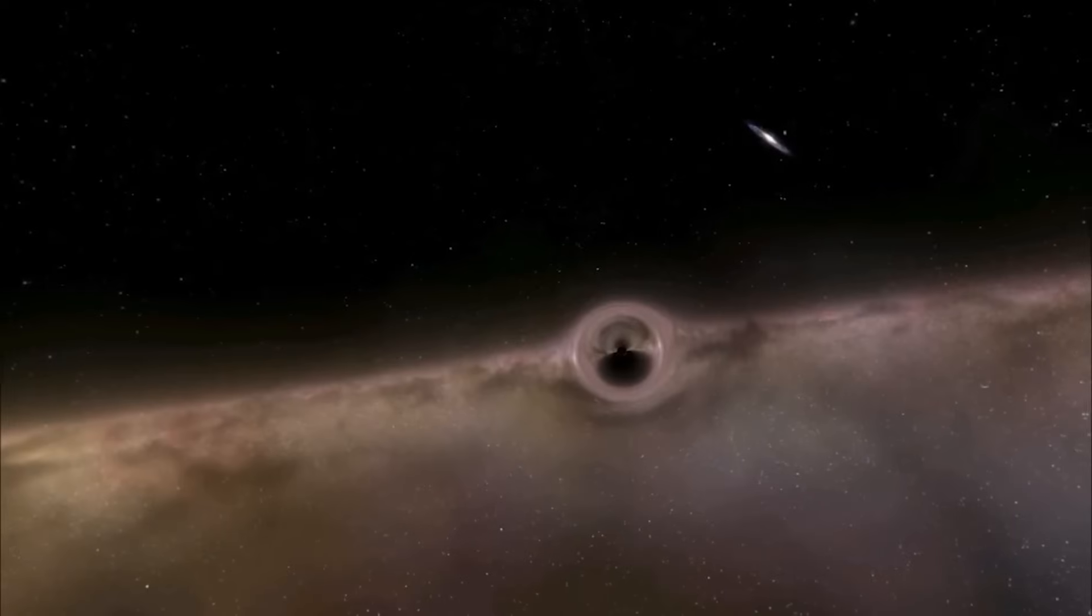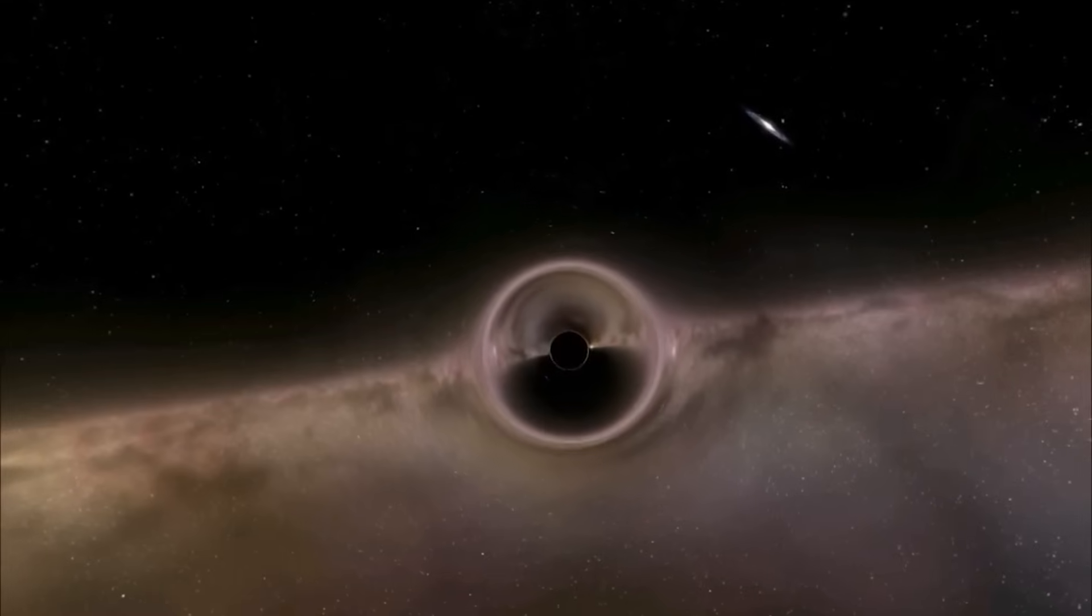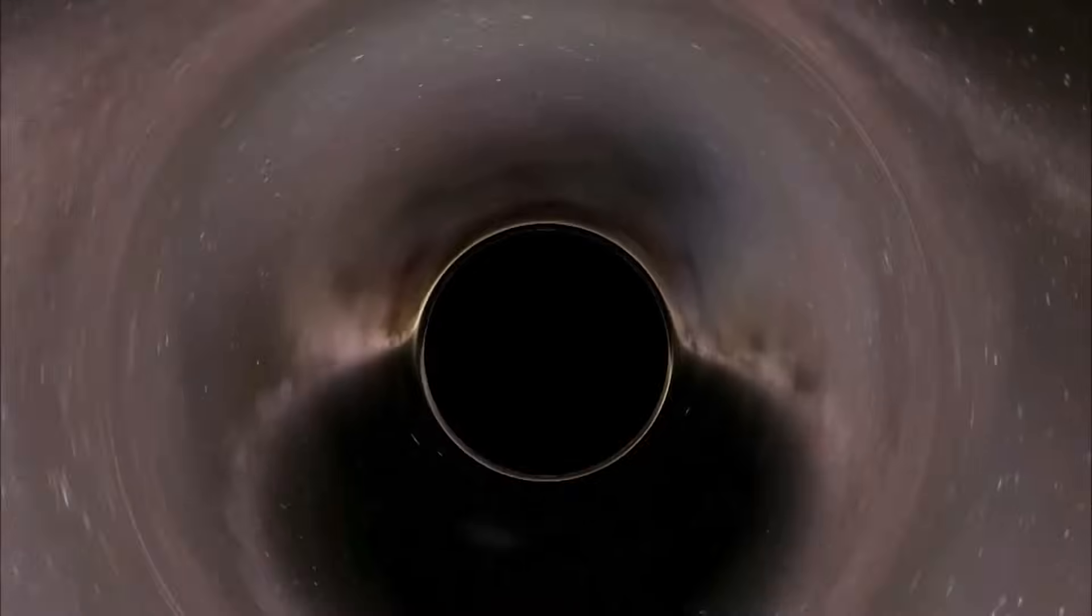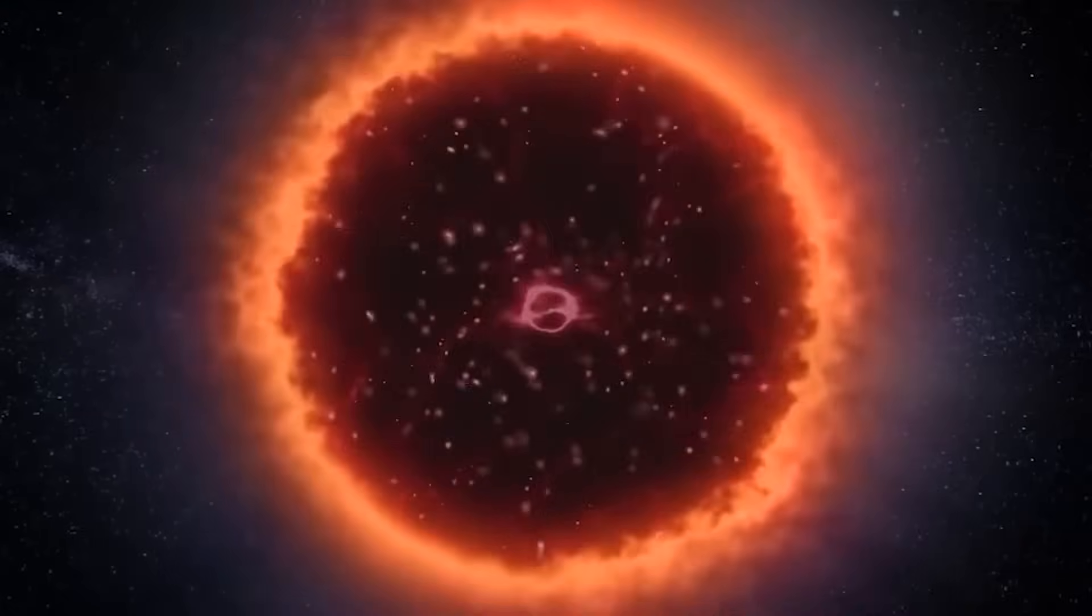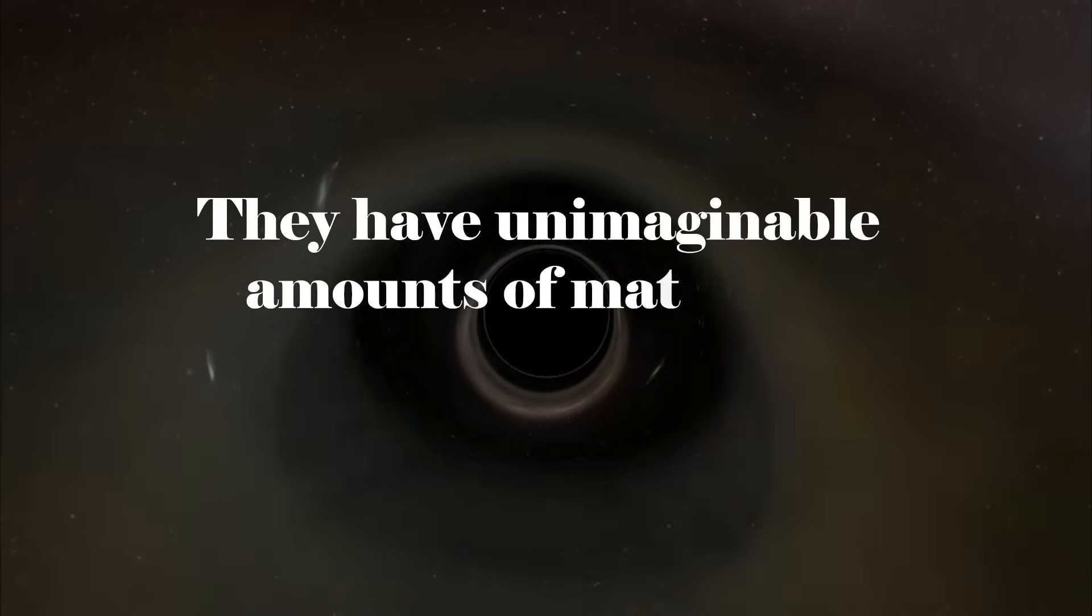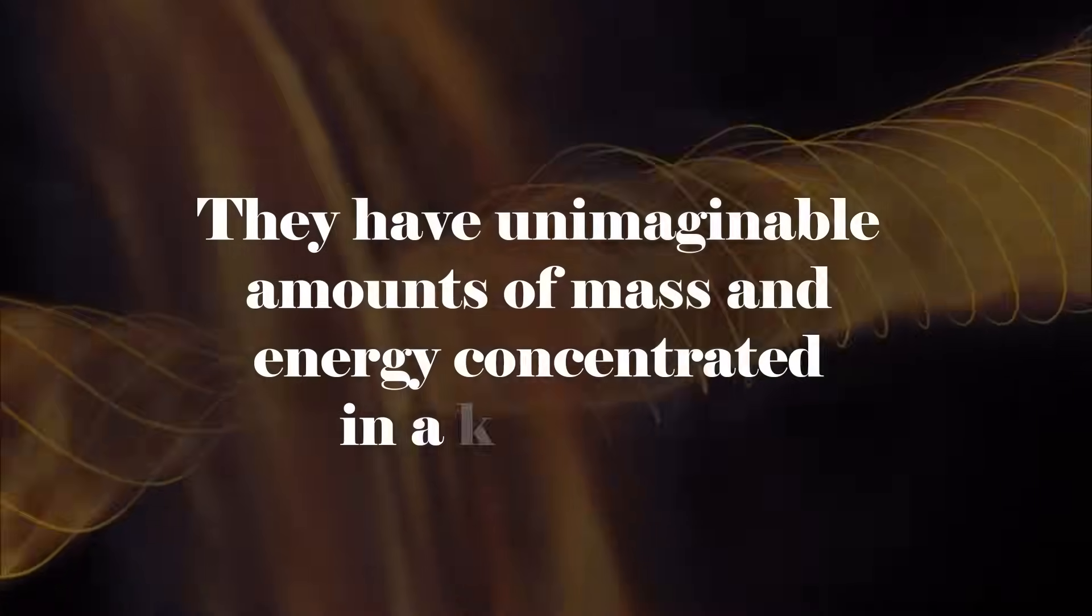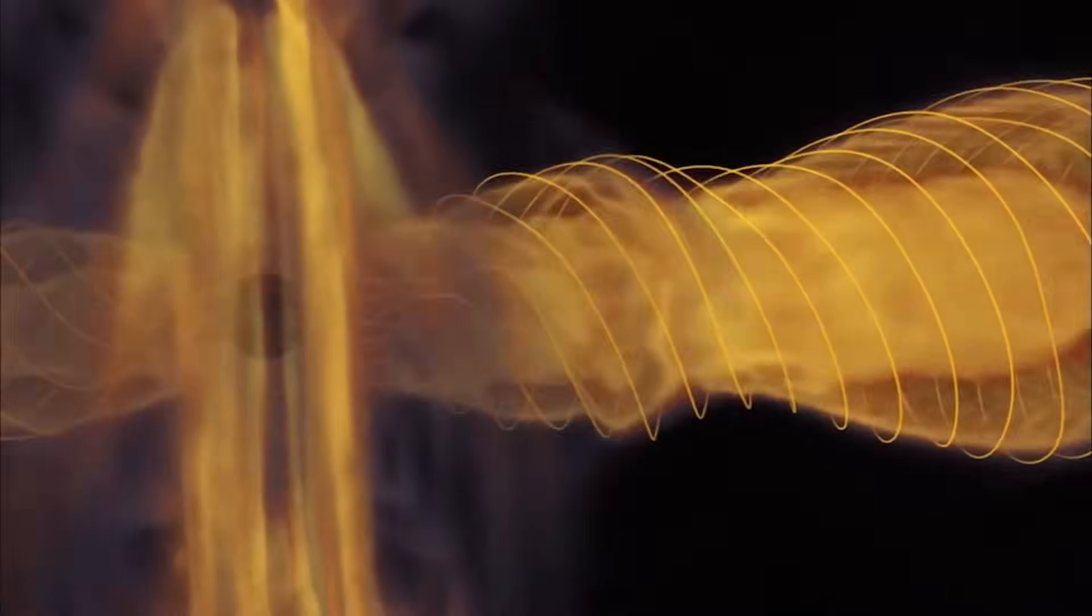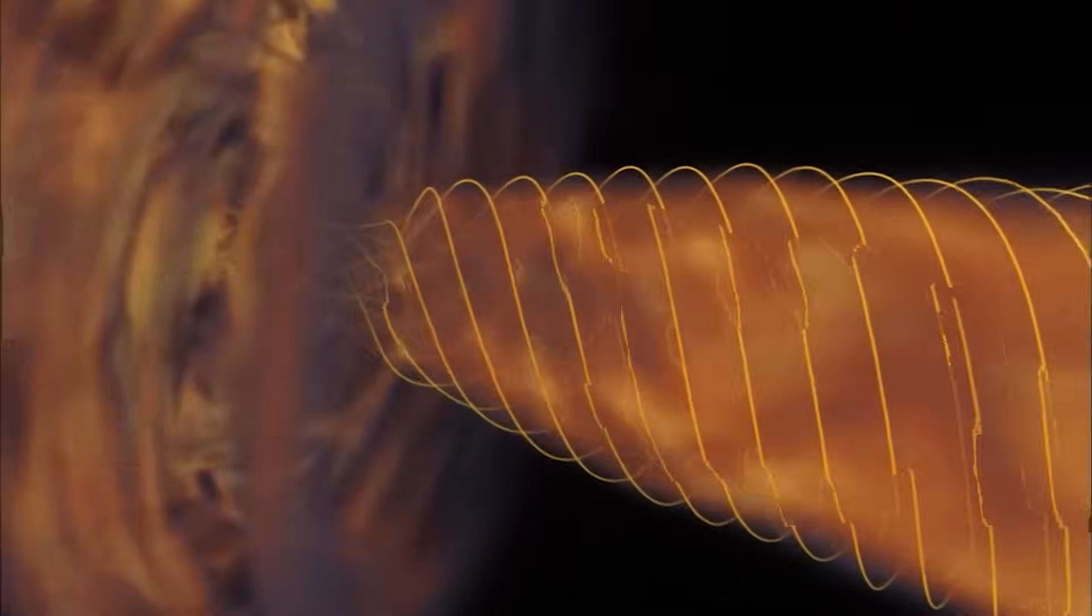The curved space and time refers to the gravitational field. The more energetic an object is, the stronger its gravitational field and the more pronounced the deformation it causes. Following this theory, let's talk about black holes, which are one of the most extreme objects in the universe. They have unimaginable amounts of mass and energy concentrated in a tiny space. Because of their great mass, the gravitational field of black holes becomes very intense, uncovering a deep warp in the fabric of space and time.